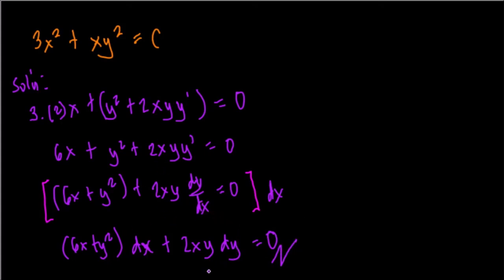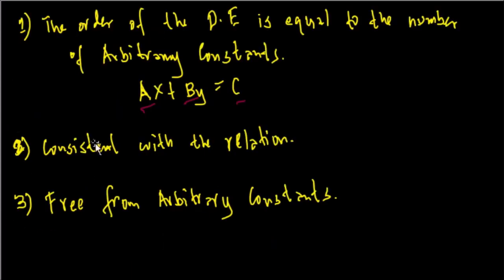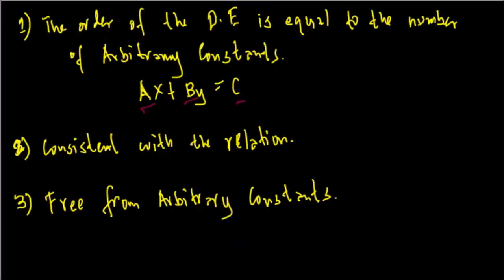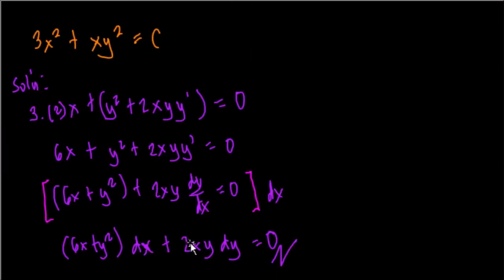This is the answer. The order is first order since we have dy/dx, which is correct because the original equation had only one arbitrary constant. Checking rule two, it is in terms of x and y. Checking rule three, it is free from arbitrary constants. That's all for this video — thank you for watching, and as always, enjoy learning.